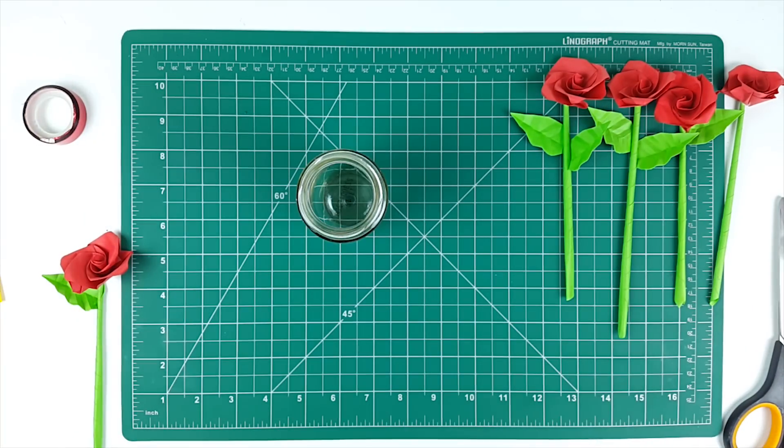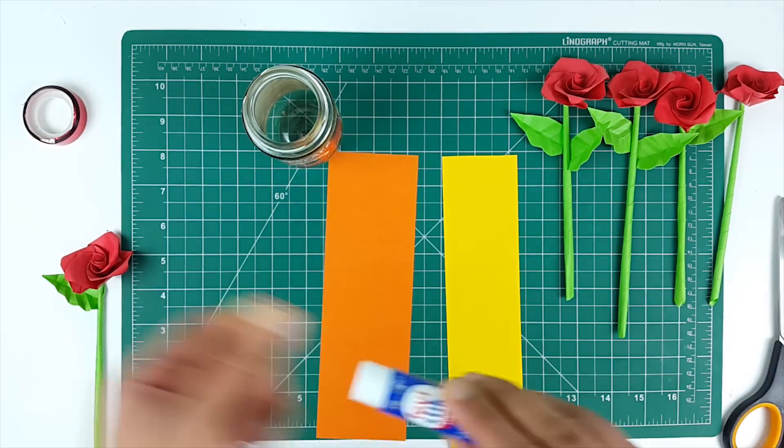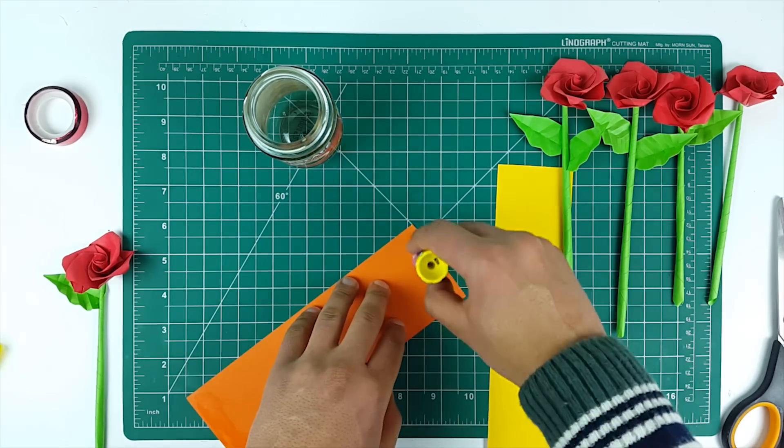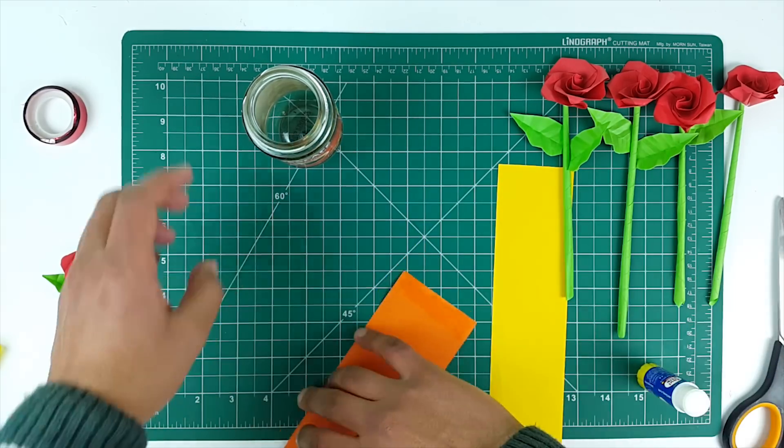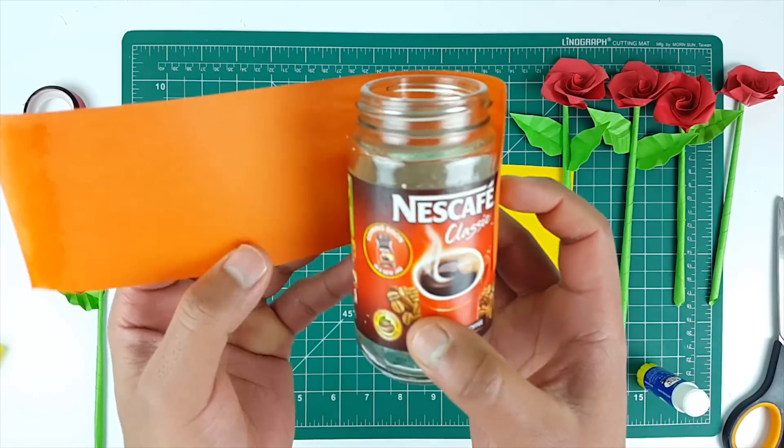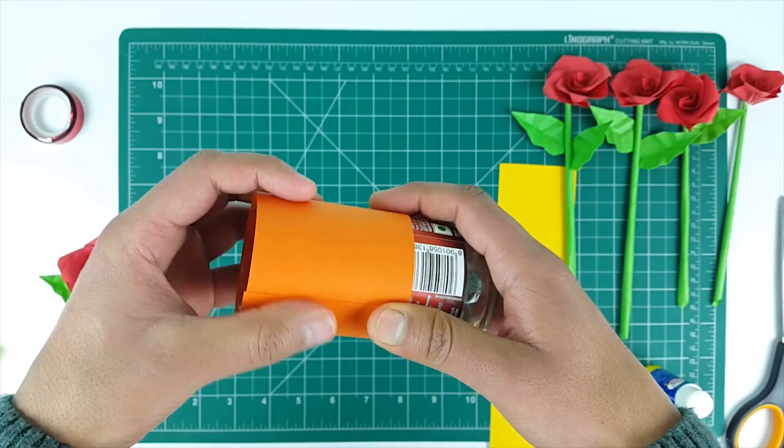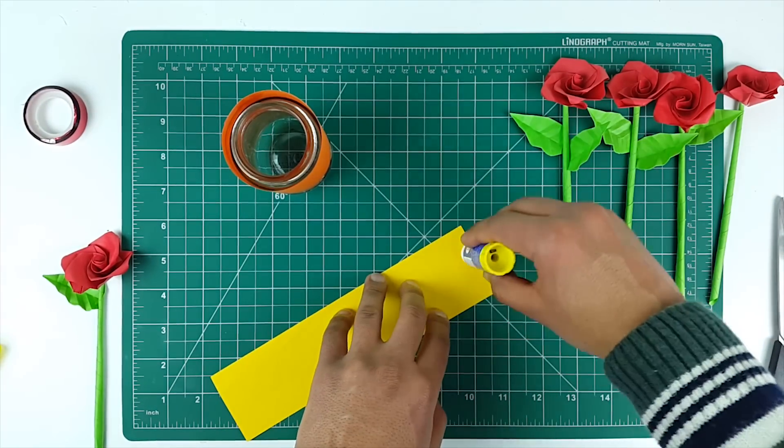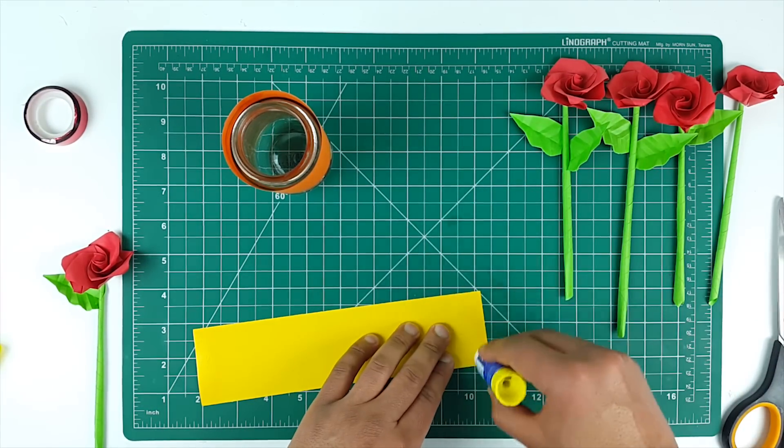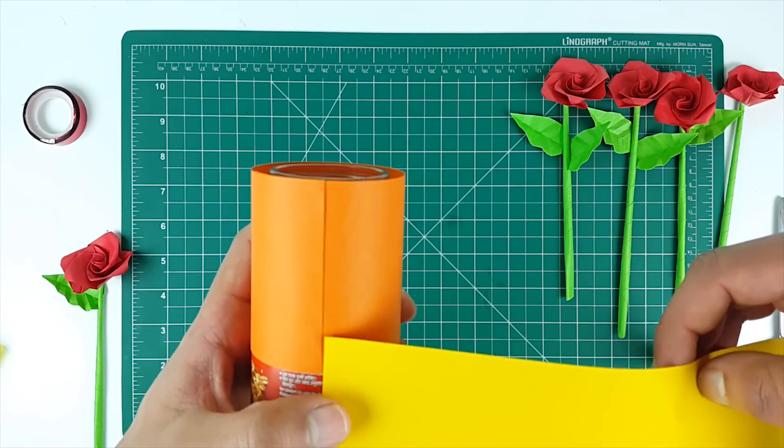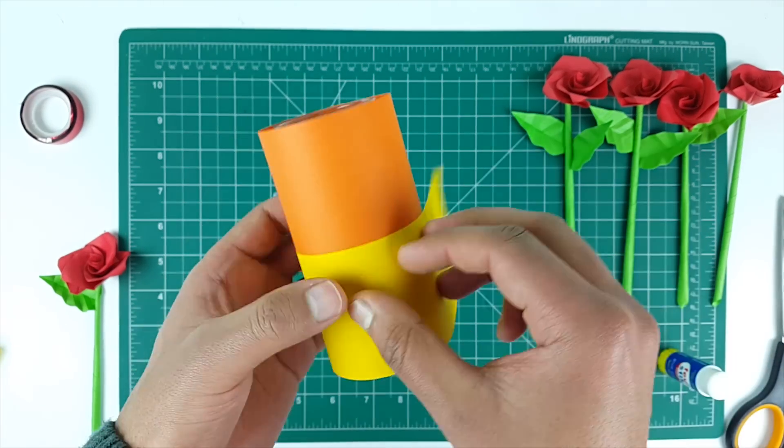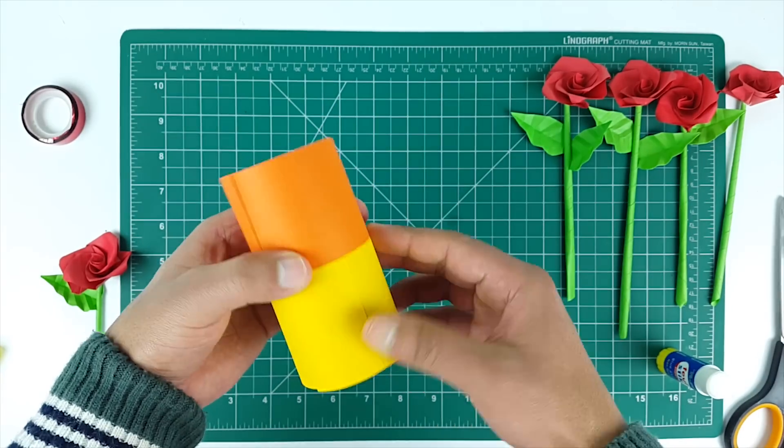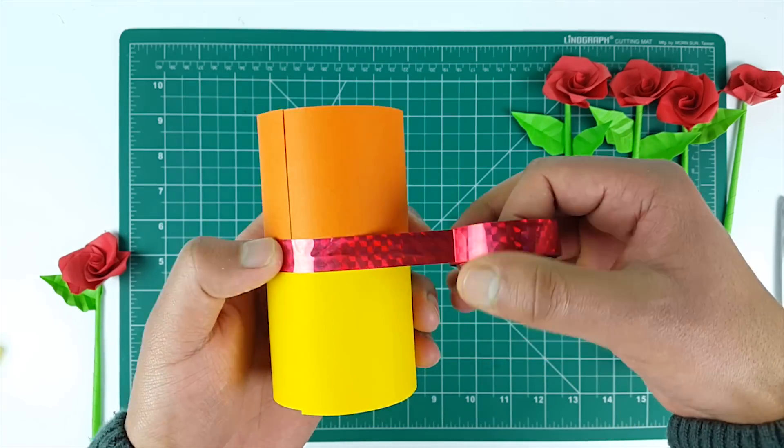Now let's make the flower base. For that, take an empty jar and paste two paper strips on it. Apply glitter tape and put the flowers in the vase.